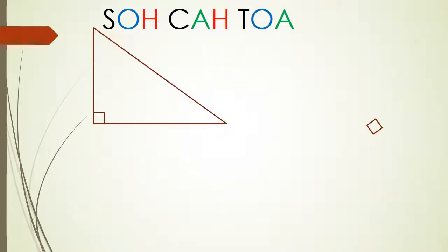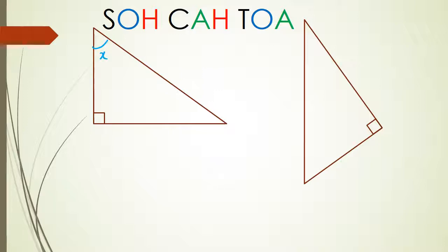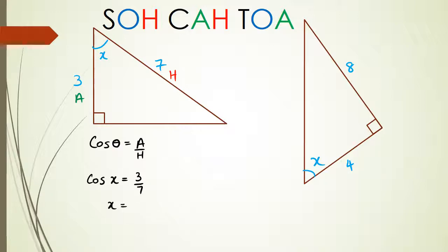Let's do another example. We have a triangle with sides 7 and 3, and I'll do a second one with 8 and 4. For the first triangle, 7 is the hypotenuse and 3 is the adjacent, so we're using the cos rule. We have cos θ = adjacent over hypotenuse, cos x = 3/7, so x = inverse cos of 3/7.